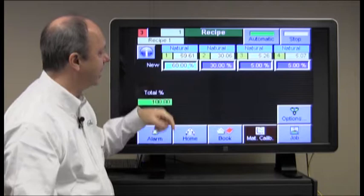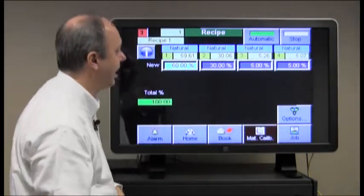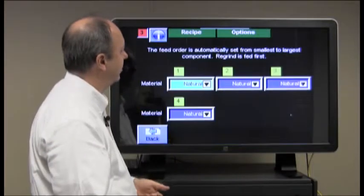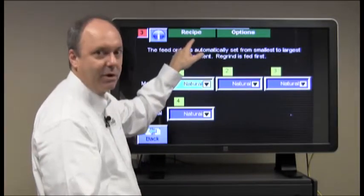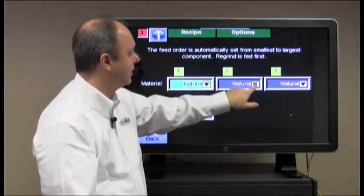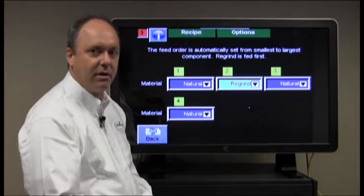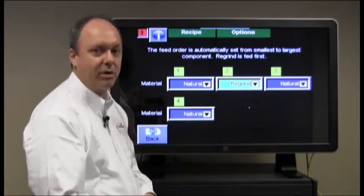If we wish to make one of these regrind, we push the options button, and it brings up the option button for the recipe screen, indicated here at the top recipe options. To change the material, we simply press this and select regrind. So now, component 2 has been set for a regrind.